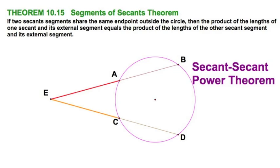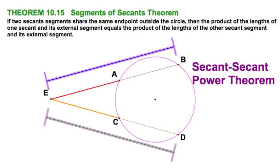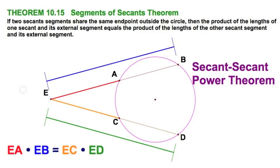You take this secant, you take the external portion times the whole portion equals the external portion times the entire secant segment. So if I'm going to write that out, let me draw in a couple segments here. So there's your red, well, red for the external segment times blue, the entire segment, equals